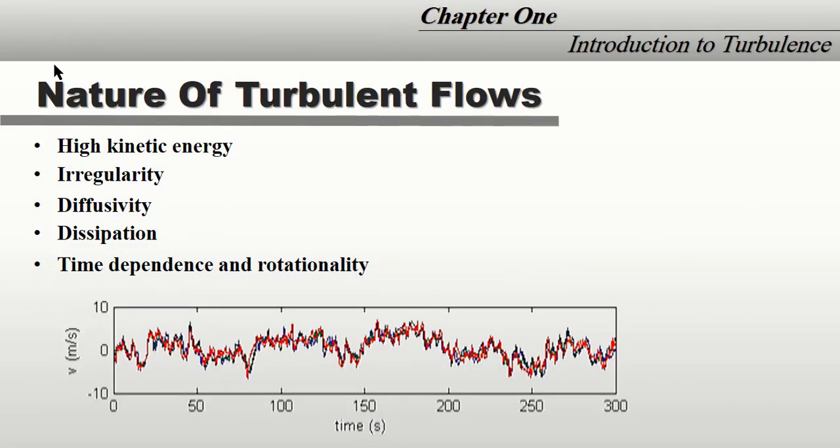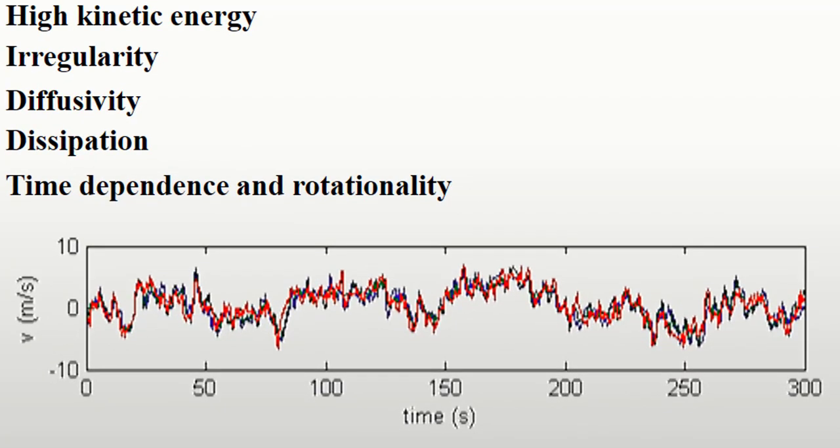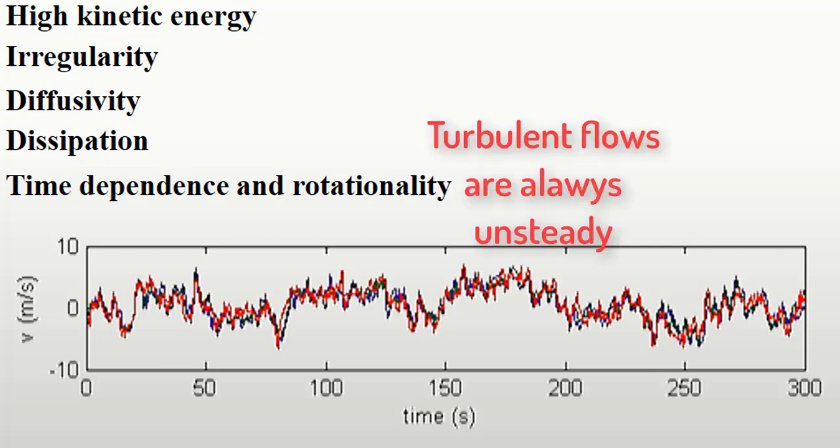In addition, time dependency: various quantities show random variation with time and space coordinates. As shown here, the velocity varies unpredictably. This is one big property for turbulent flow—it is always unsteady.